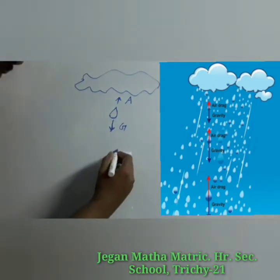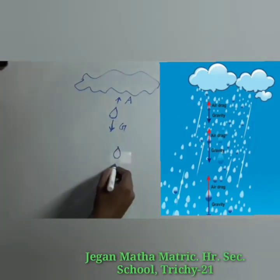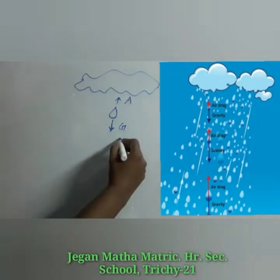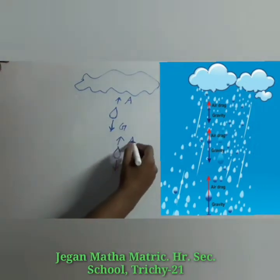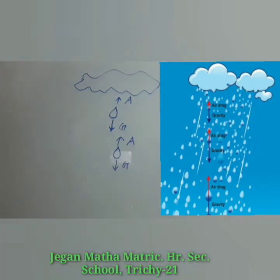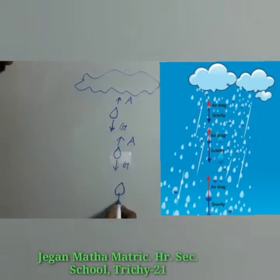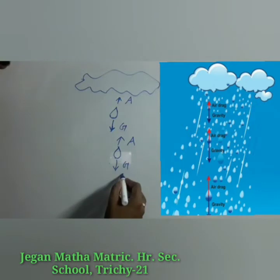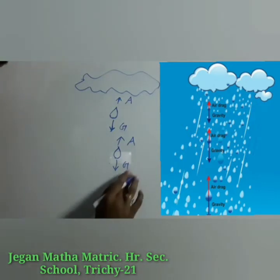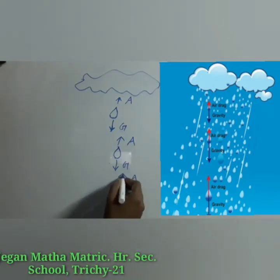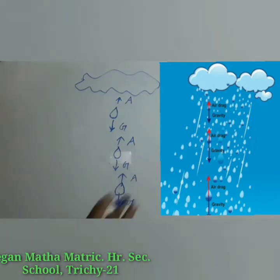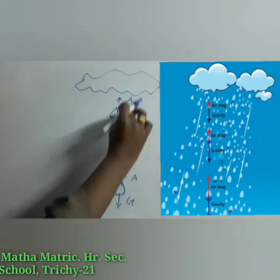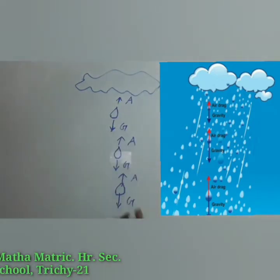After some time, as the raindrop comes down, the gravitational force remains the same but the air drag force increases. When it is near the surface of the earth, the gravitational force and the force given by the air drag are equal in magnitude — you can compare the lengths here; they are both the same.